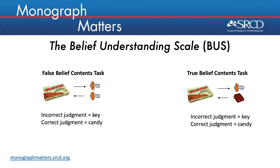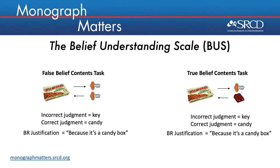Children's judgments are scored as correct or incorrect, and children's justifications are scored as involving belief reasoning or not — in other words, do children refer to the picture on the box as causing the person's belief? In the supplemental materials in Chapter 9, we provide a coding scheme for how to classify different types of justifications, but we found that the most concise use of the scale involves coding justifications as using belief reasoning or not.